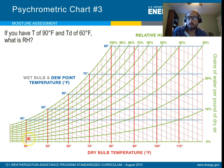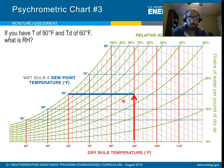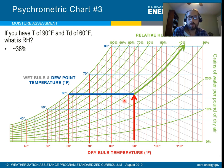Let's do another example. We have a dry bulb temperature of 90 and a dew point temperature of 60. What's the relative humidity? We find a dew point of 60 — remember, it's horizontal from the dew point. We have 90 degrees on the bottom. The relative humidity — you have to do a little interpolation — and we get about 38%.